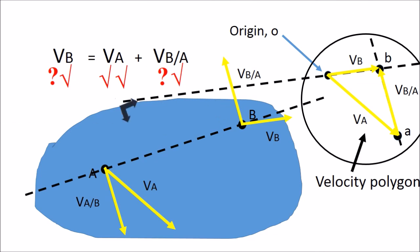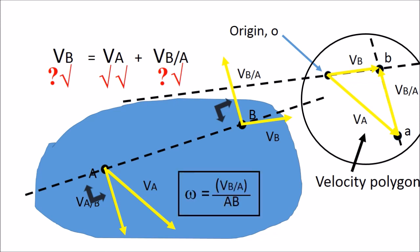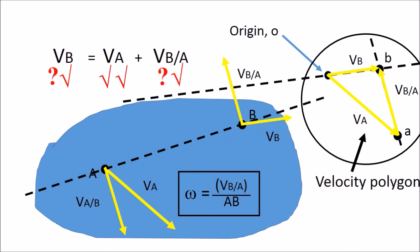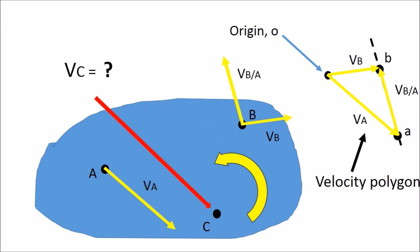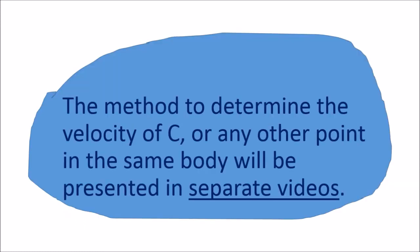With this, we can determine the angular velocity of the body, given by the magnitude of this relative velocity and the length of AB. It is upon our observation that the direction of rotation is counterclockwise. If we need to know the direction and magnitude of the velocity of C, we hope to present that in another video. Thank you.